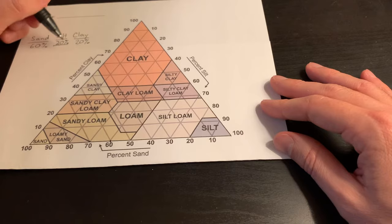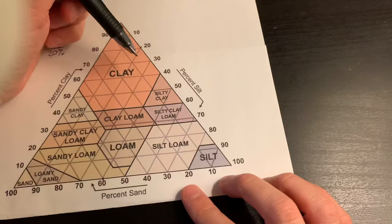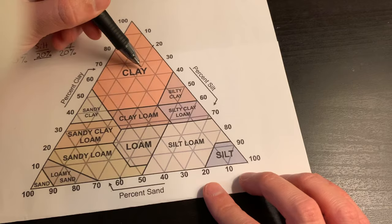If we take our percent silt as 20 percent, we come up here and here is percent silt, silt at 20. Notice this arrow is pointing down in this direction, so that means we are going to read silt down this way.